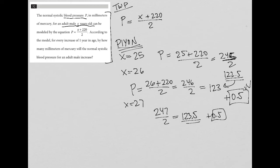Another method here, however, is this whole idea of how many millimeters of mercury will the normal systolic blood pressure for an adult male increase for every increase of one year. That sounds a lot like slope to me. And even if it doesn't sound like the definition or description of slope to you,